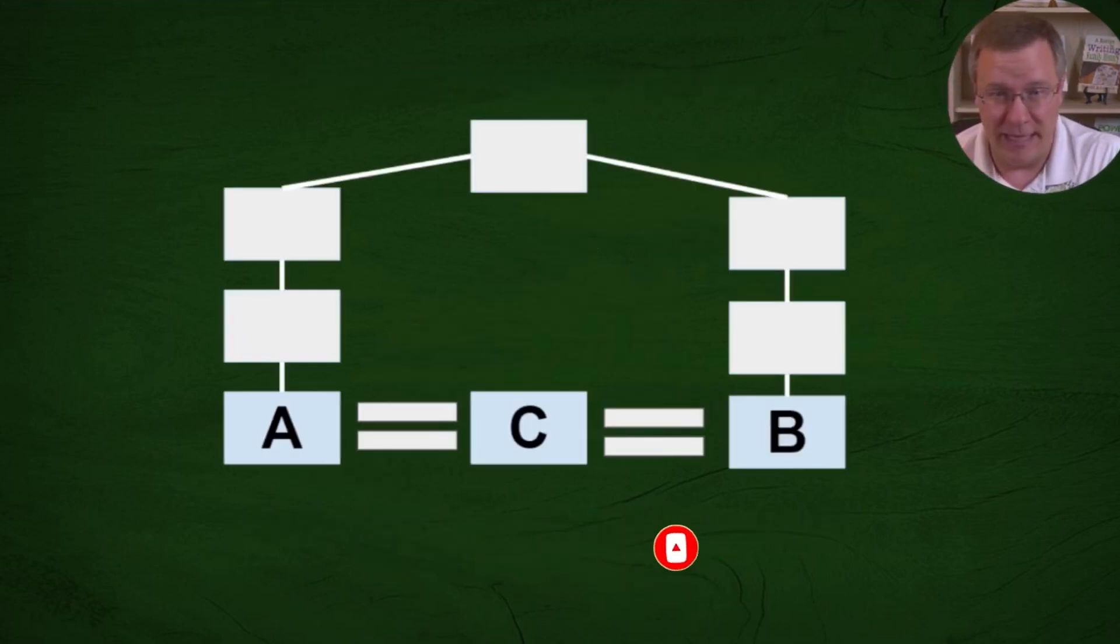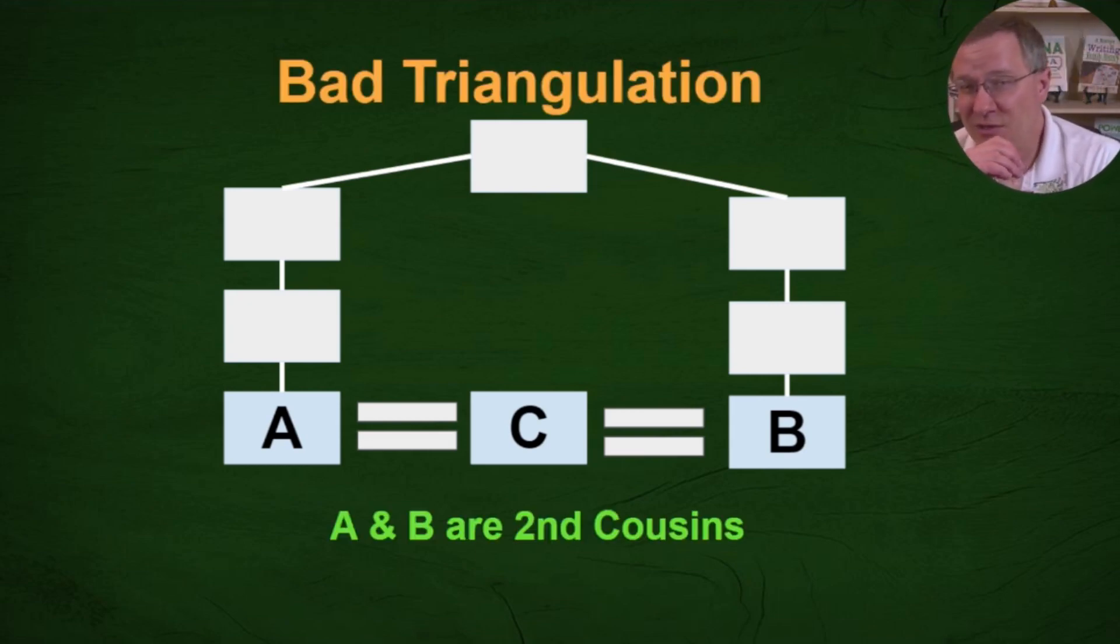Another example again somewhat close relationship. This now we have A and B are second cousins and so they share a great grandparent or great grandparents and C happens to match both of them. So A and B match by virtue of the relationship they have and they both match C on the same segment. So is this triangulation? Is this good triangulation at this point? Are we still in this close relationship range? Well I would still classify this really the same way that I classified the other one. This is sort of just bad triangulation. It's triangulation because we have three people